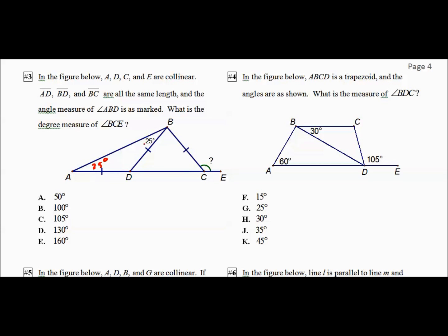So this is an isosceles triangle. These two are 25. That makes this 130. That makes this 50. This is isosceles. That makes this 50. I can also say that this is 80, but I don't care. That makes this 130.